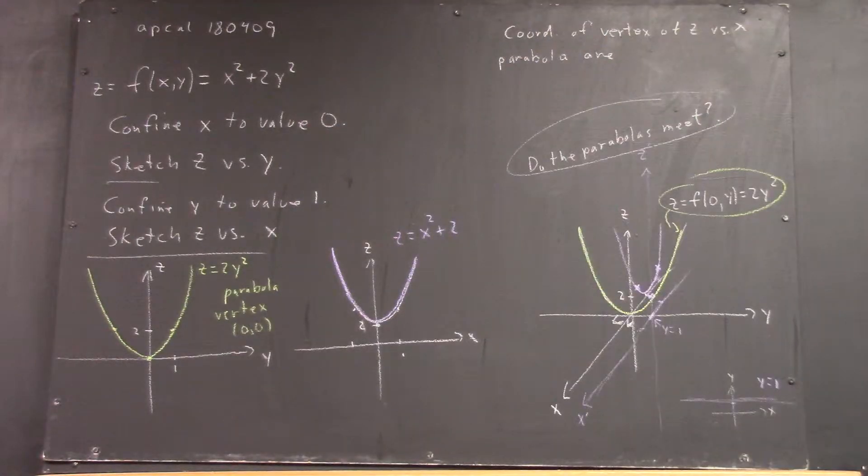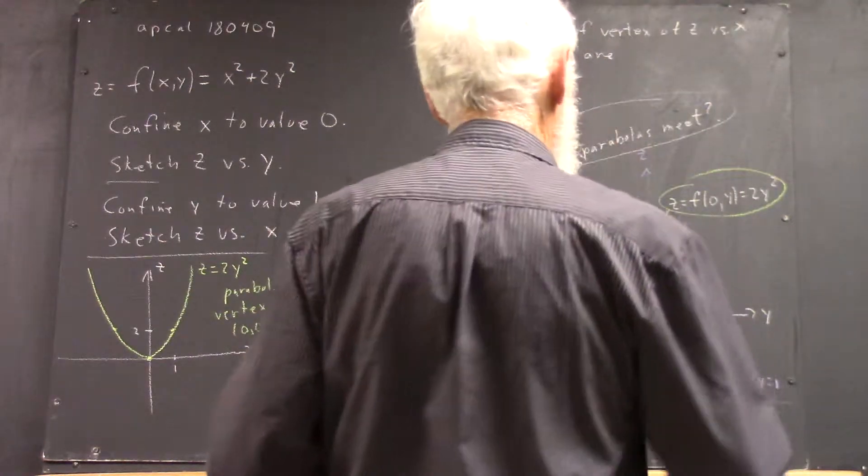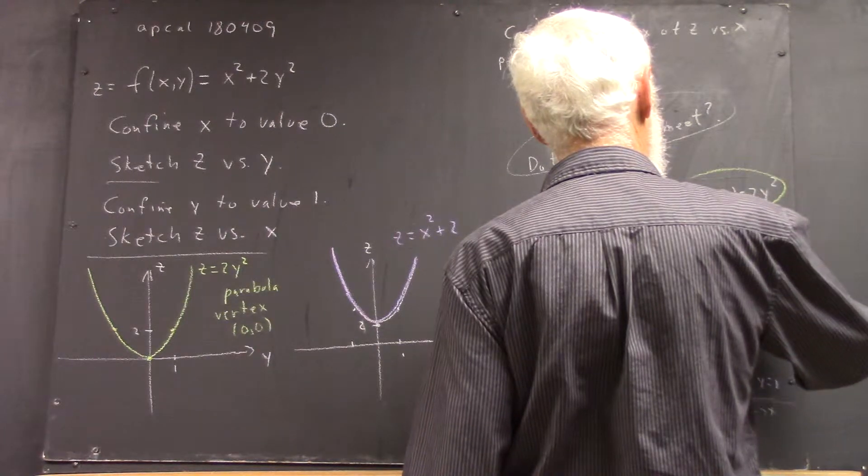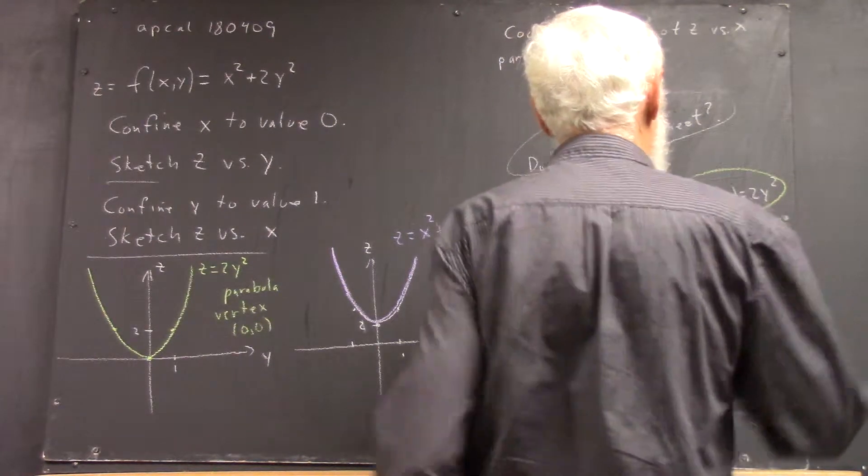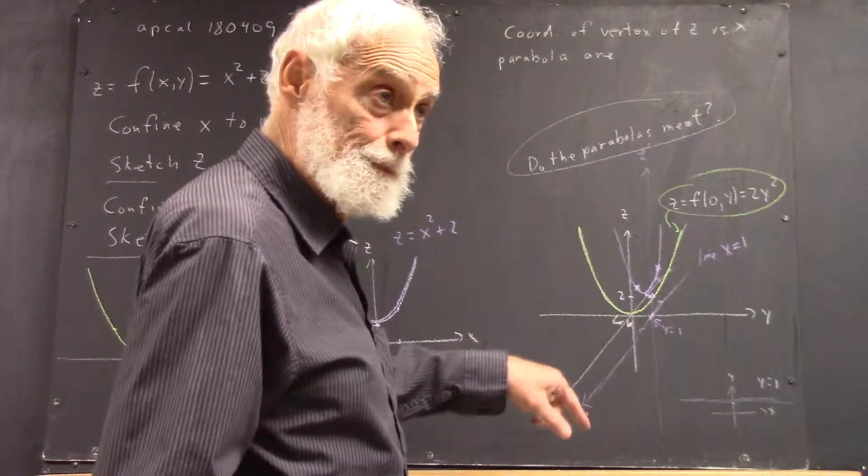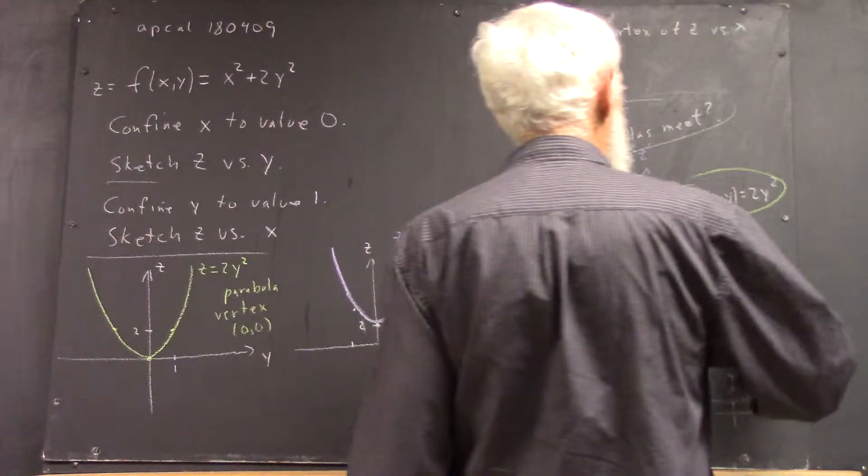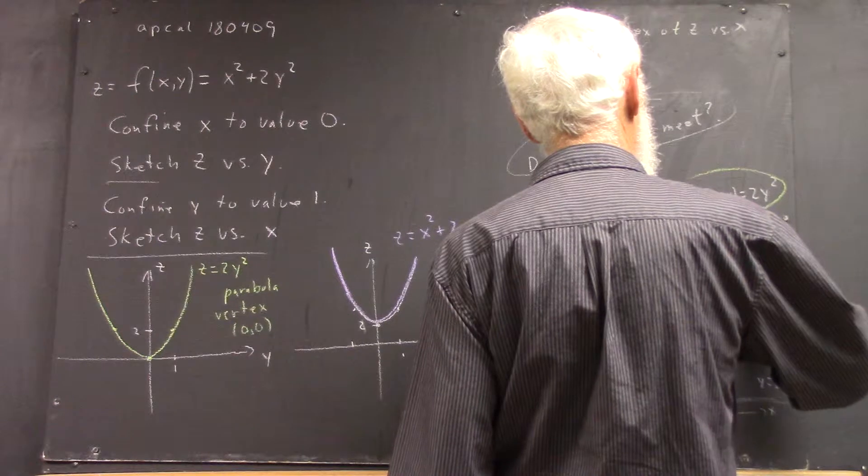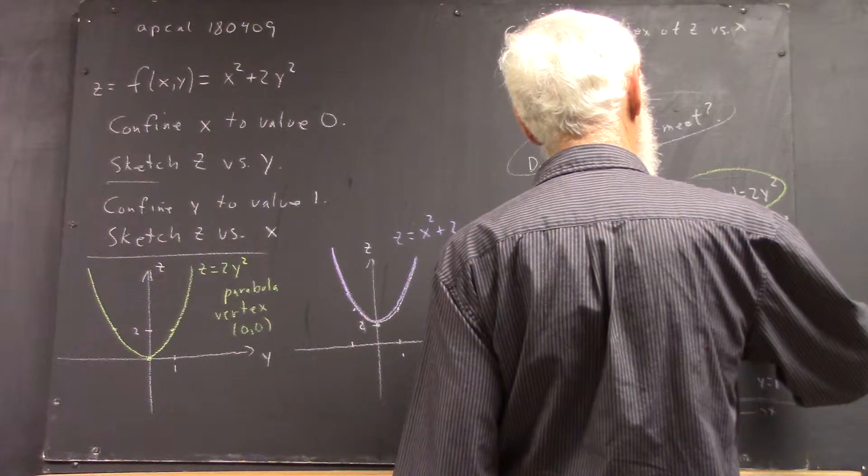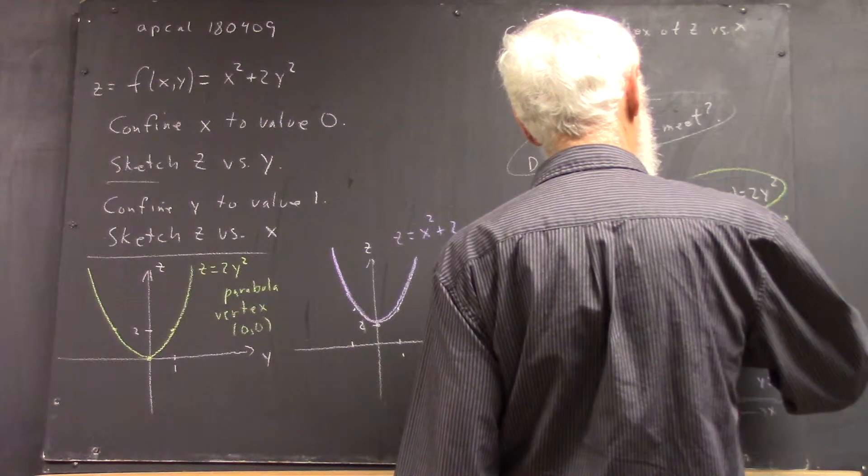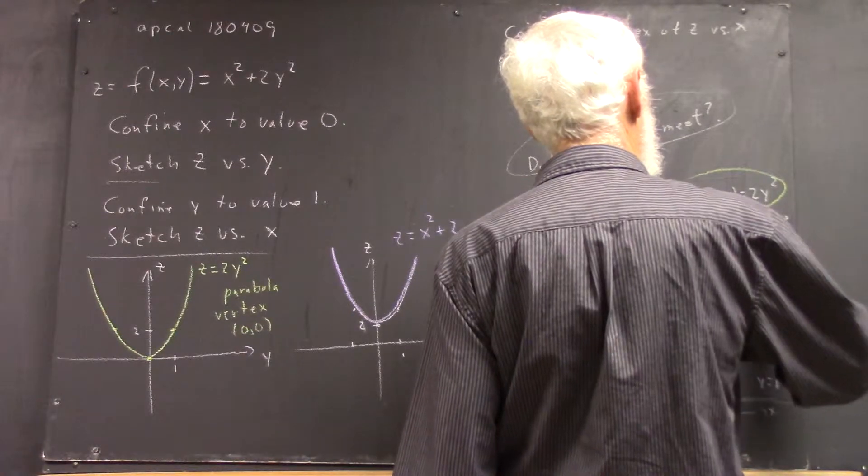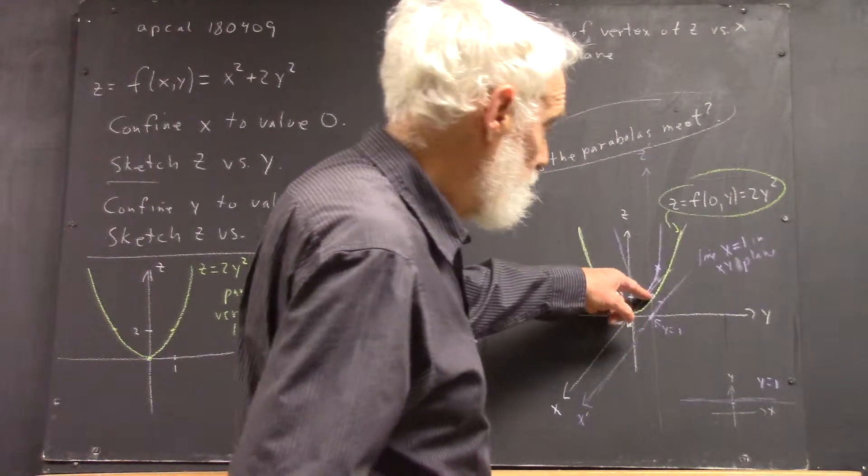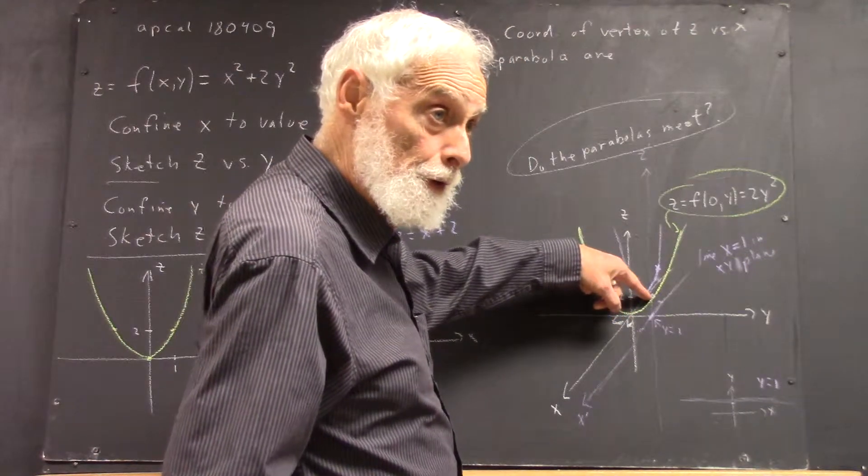And I didn't actually label that line, but that's the line x equals one. In the x-y plane, so x is one at this point, y is zero, and what's z?